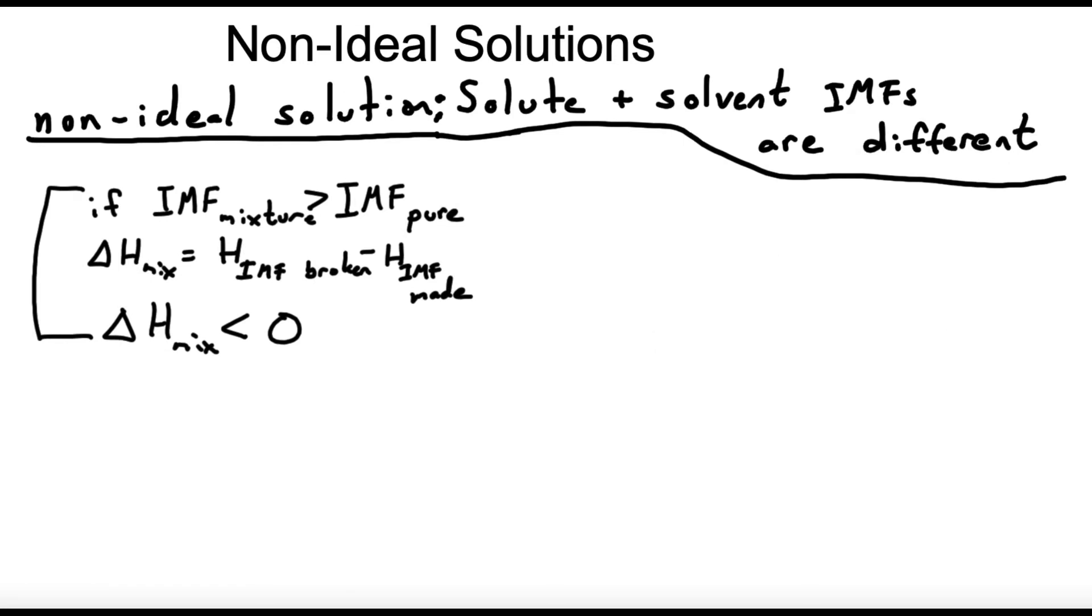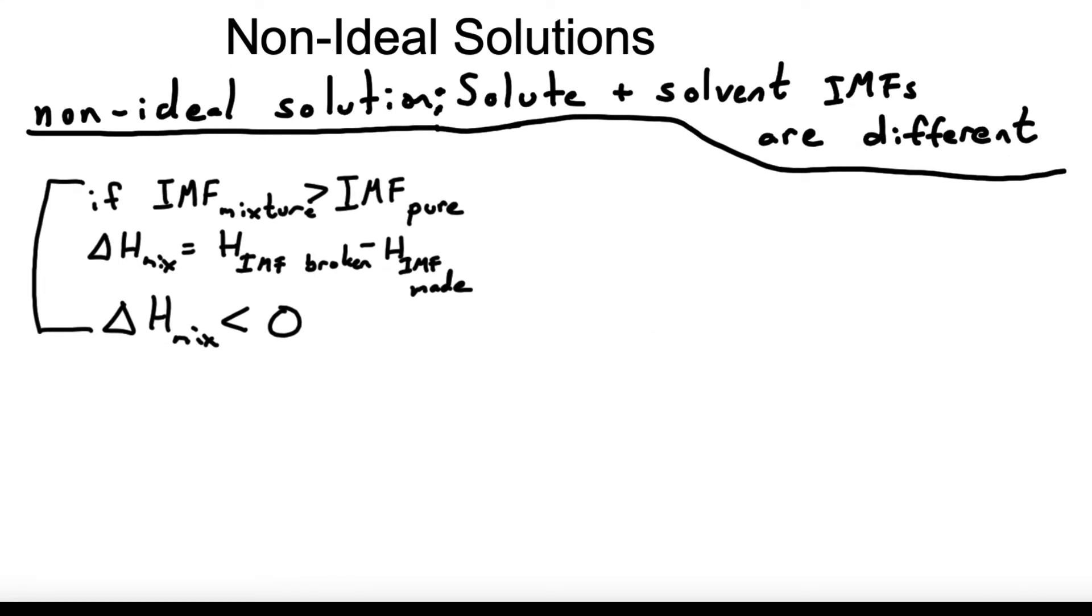We can just as well imagine a situation that's the reverse of that. In this scenario the IMFs in the mixture are weaker than the IMFs in the pure substances. We can see by the argument we made previously this is going to mean that this one would be endothermic mixing. So with non-ideal solutions depending on the relative strengths of the IMFs involved we can either have endothermic mixing or exothermic mixing.